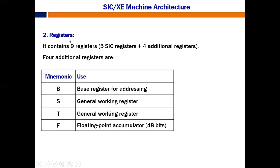The second component is registers. As in SIC we had 5 registers. Along with those 5 SIC registers, we have 4 additional registers. The first additional register is B, which stands for base register for addressing. Then S and T, which are mainly general working registers. And F is for floating point accumulator, because SIC-XE contains floating point representation. The floating point accumulator has 48 bits.